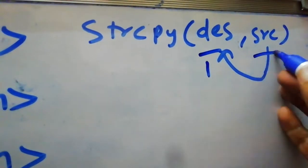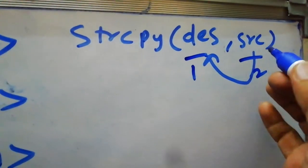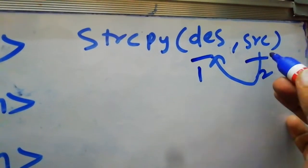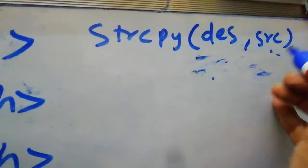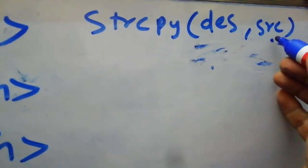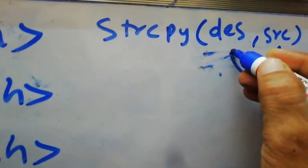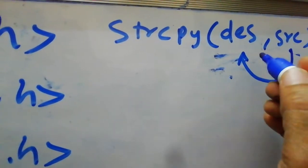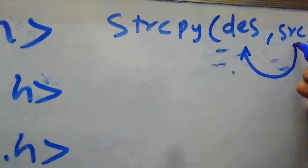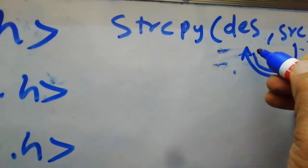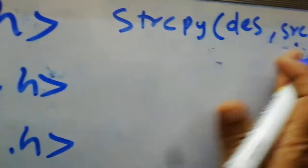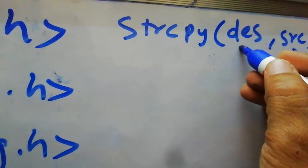In the string copy function, the first parameter and second parameter - it copies a value from the second value into the first variable. This value will be copied into this variable. Remember, this is the source and this is the destination.